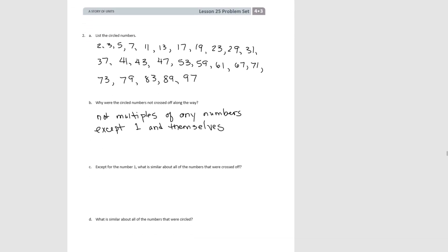Except for the number one, what is similar about all the numbers that were crossed off? Go back and look at those. What's similar about them is they are all composite numbers — they all have factors other than just one and themselves.